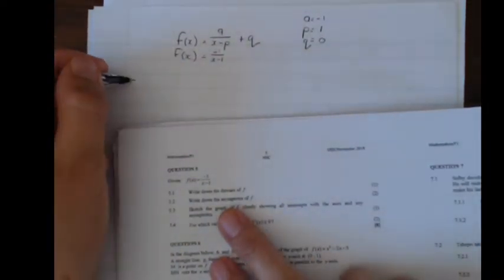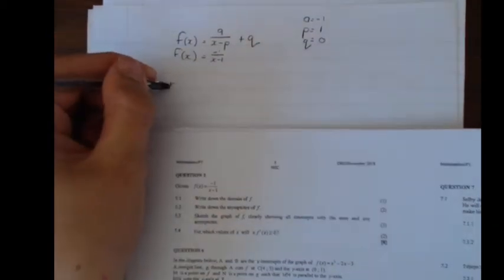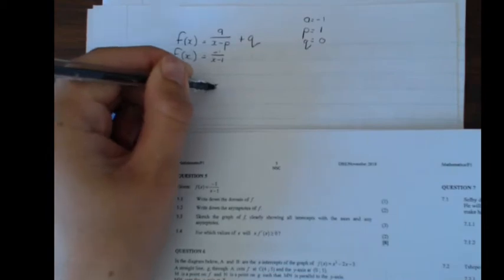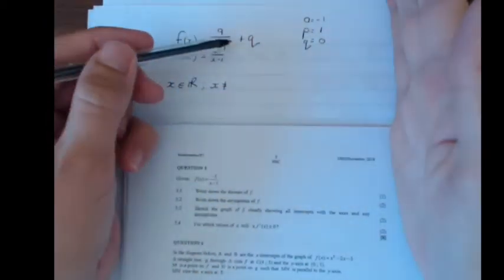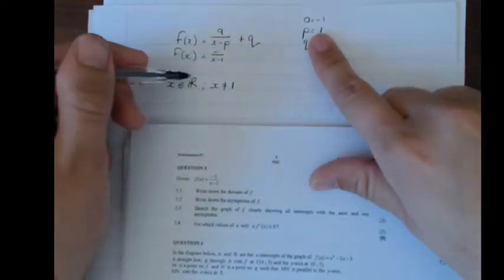Then they say first 5.1, write down the domain of f. So the domain of f, domain for hyperbola, always the same: x is an element of R, but x is not equal to the p, which is the value of the vertical asymptote. The x is not going to cut that vertical asymptote ever. So the value of p, which is 1. x is an element of R, but x is not 1.